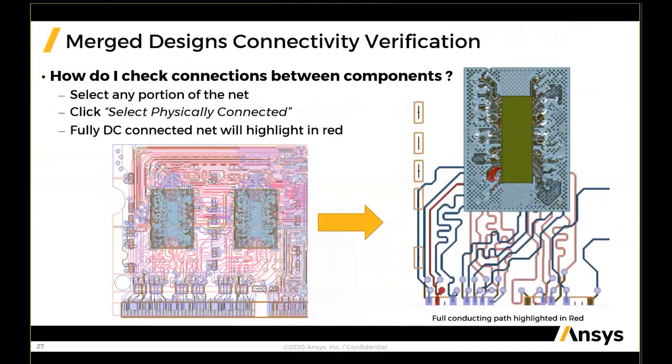Here is another example of the 3D layout workflow — how to check connectivity. Once you are in 3D layout, you can easily click on any net, right-mouse-click, and select 'Physically Connected.' The fully DC-connected net will be highlighted in red, showing the full DC path going from a bump of the package all the way to the connector pin on the PCB.